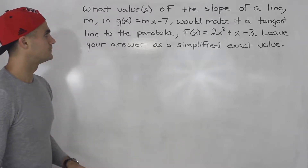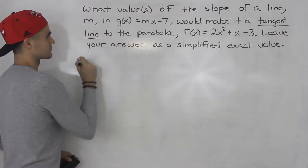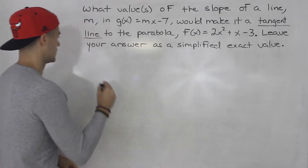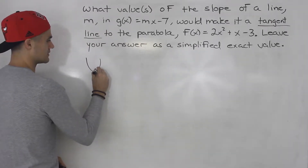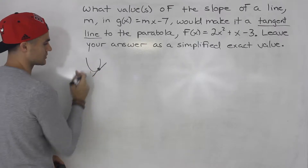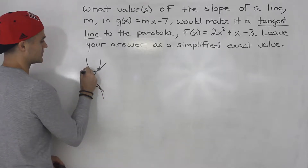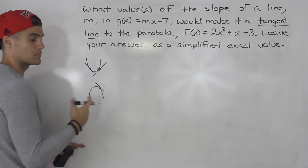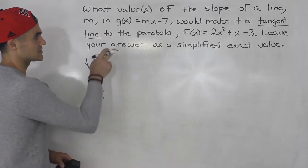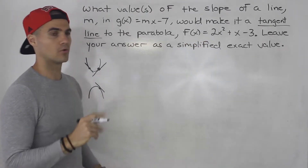If you remember from the lecture videos, when you see a tangent line, what that means is that the line and the quadratic are going to have one point of intersection. So if you have a quadratic, the tangent line is going to intersect at just that one point. You could have a quadratic that opens down, a downward sloping line — there can be multiple orientations, but nevertheless, when making a line tangent to a parabola, it means one point of intersection.